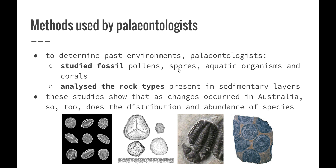You'll recall from the local ecosystem topic that distribution refers to where a particular species is found, and abundance refers to the number of individuals within that species. Changes that have occurred in Australia over time have led to changes in where different organisms — both plants and animals — are found, and how many of them are in particular areas.